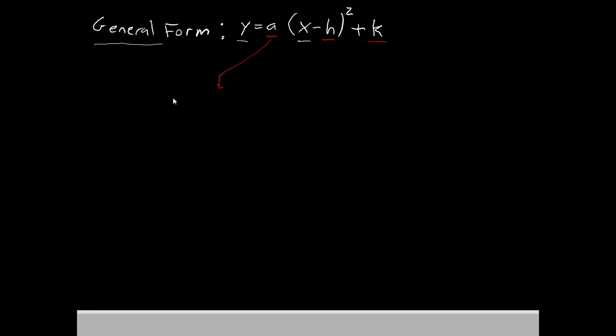The a is called the vertical stretch. Now, what a does is modify how steep the parabola is. If the number is bigger, that makes the parabola more steep. And if the number is smaller, that makes the parabola wider.